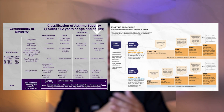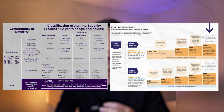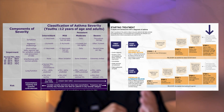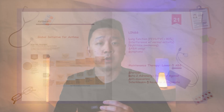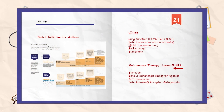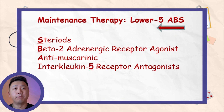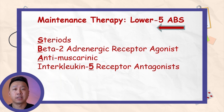For example, if it's severe, we move down to the severe chart and look at what type of therapy applies. For the maintenance therapy, there is the acronym 'lower 5 ABS,' going from right to left based on severity. S stands for steroids, B stands for Beta-2 adrenergic receptor agonist (usually long-acting), A stands for anti-muscarinic, and I stands for interleukin-5 receptor antagonist.